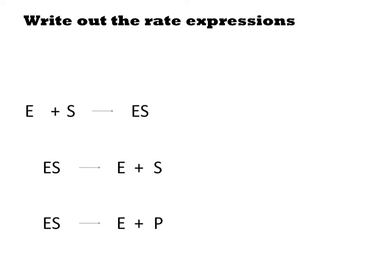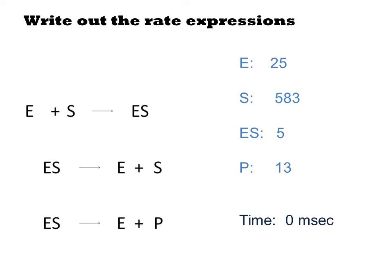Let's describe what happens during this simulation. I've made up some initial values for each species. We have 25 Es, 583 Ss, 5 ESs, and 13 Ps. We could have made these values any integer values. They represent the number of individual molecules or complexes in the system. We also have an initial time, let's say 0 milliseconds. We also had chosen an end time for the simulation at 10 milliseconds.